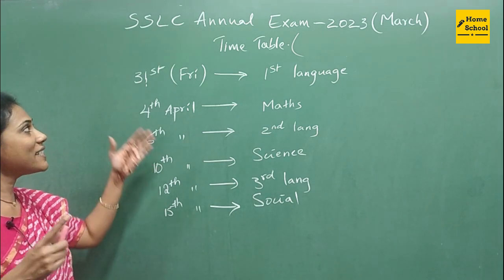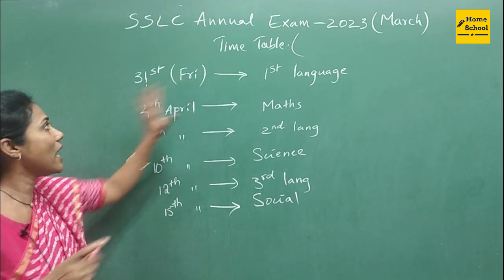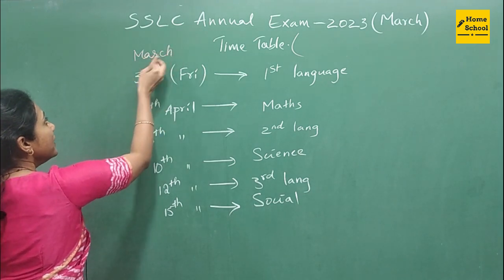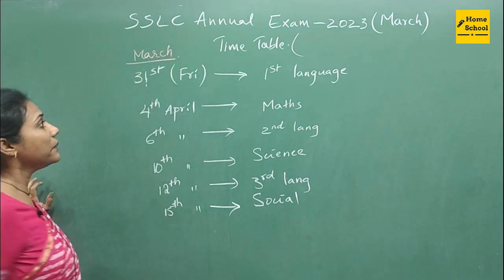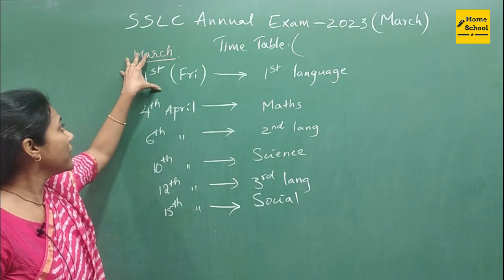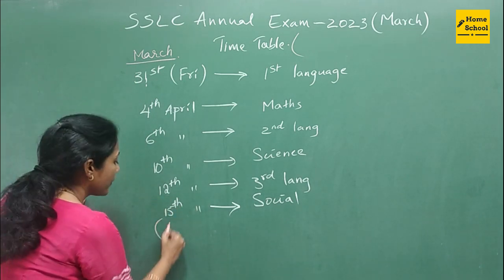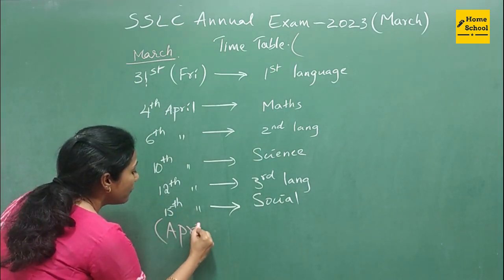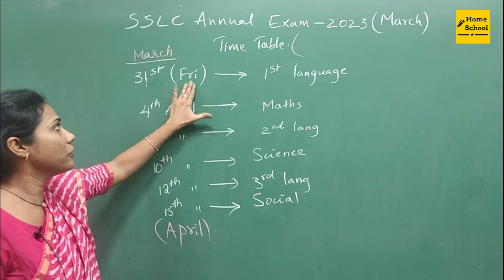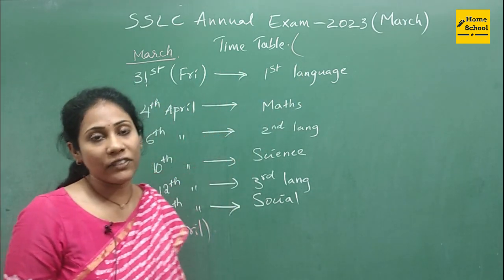Your examination is getting started right from 31st March onwards. So the final date of exam is from 31st March. You have from 31st March to 15th April. The very first subject is on 31st March, which is Friday.